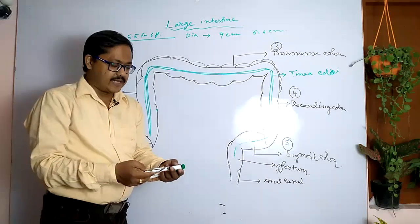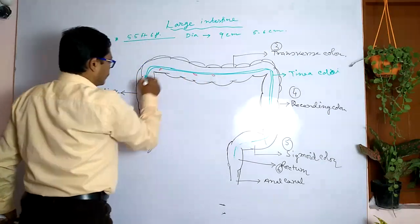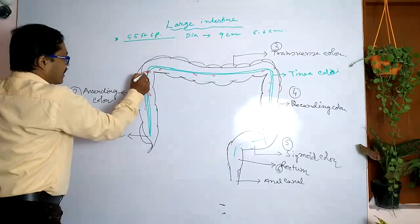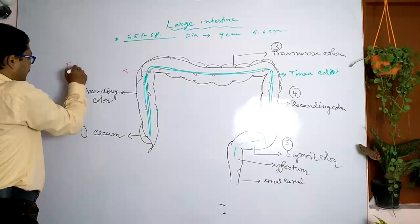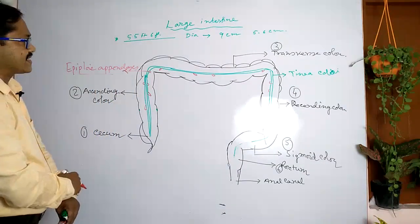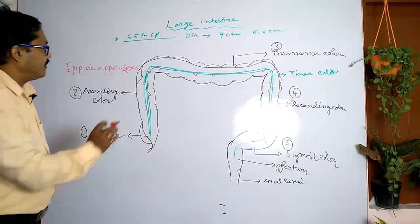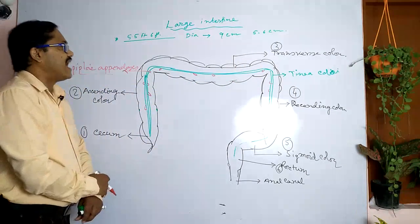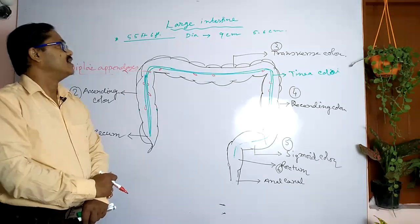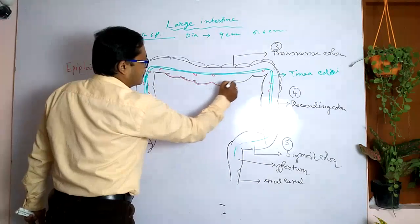Some fatty, yellowish pouches develop from the taenia coli. These fatty yellowish protrusions are called epiploic appendages. So two morphological salient features of the large intestine are taenia coli and epiploic appendages. Taenia coli acts as a girder which holds the total 5.5 to 6 feet large intestine into a 4-foot length, which is why circular saccule-like structures develop in the transverse colon.